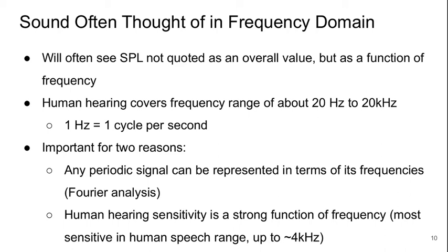Human hearing covers the frequency range from about 20 to 20,000 Hertz, where a Hertz is one cycle of the signal per second. Thinking about things in the frequency domain is important for two reasons: first, any periodic signal can be represented in terms of its constituent frequencies — this is the idea of Fourier analysis. Second, human hearing sensitivity is also a strong function of frequency. We're most sensitive in the range in which human speech occurs, which is around a few hundred up to about 4,000 Hertz.